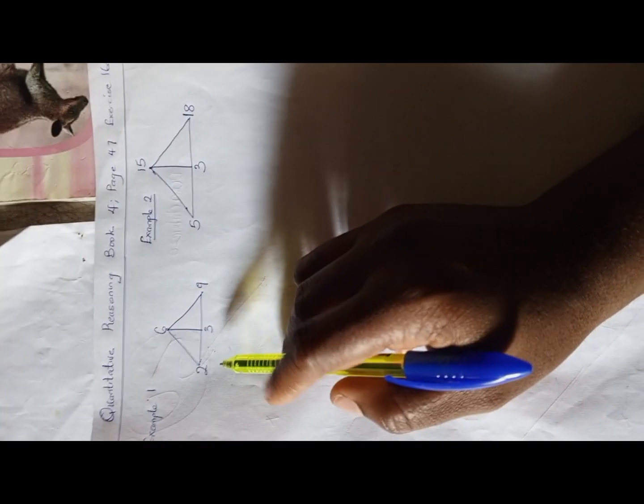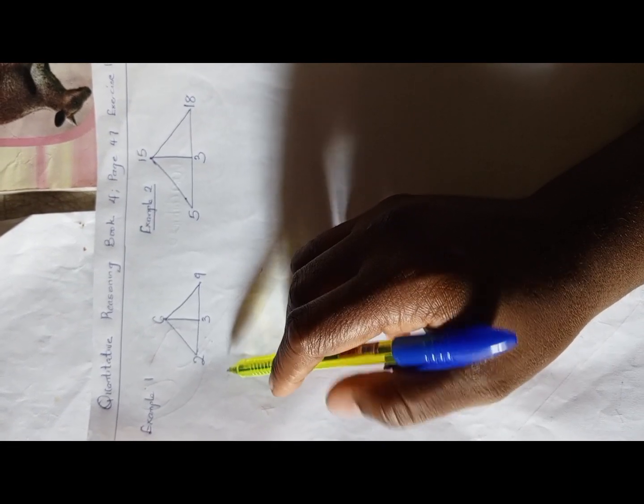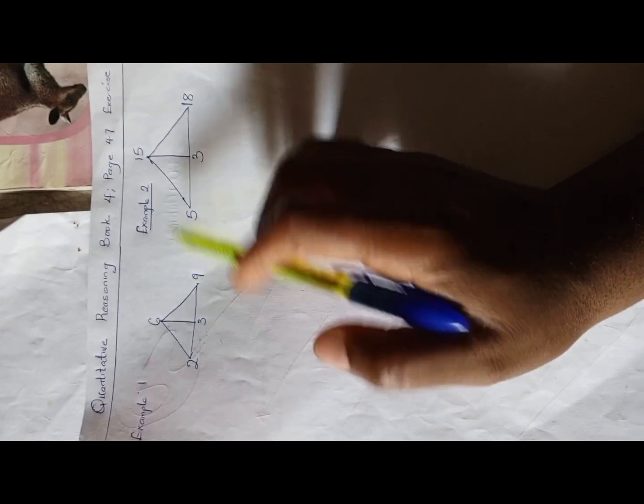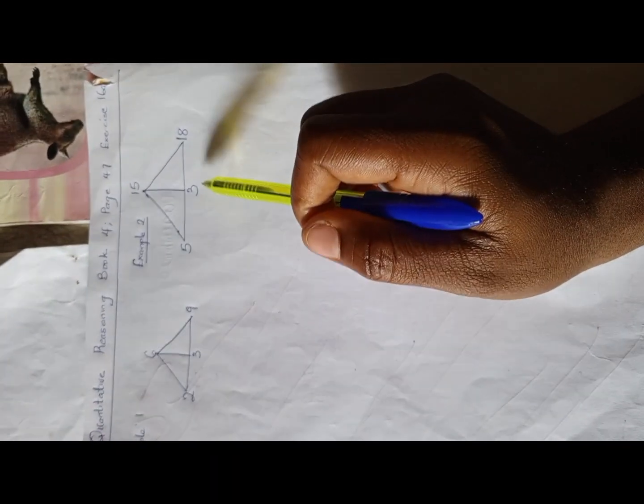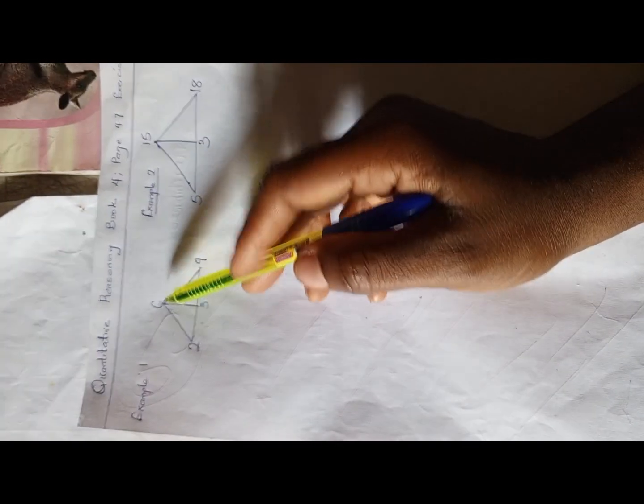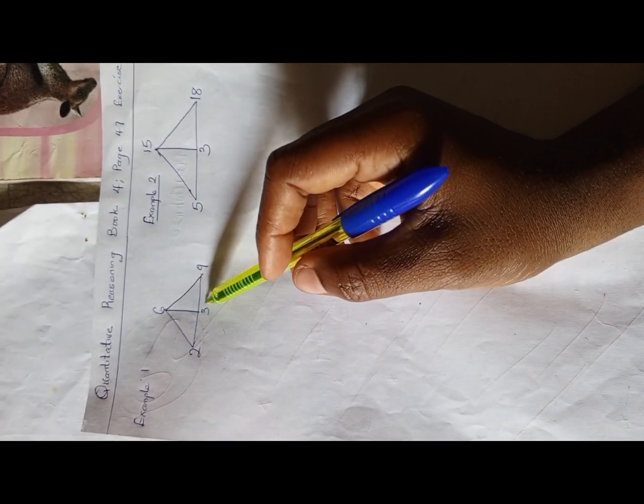We have 6, 2, 3, 9 in the first example, and in the second example we have 15, 5, 3, and 18. So let's try and go through them. We have 6 plus 3 equals 9, and 15 plus 3 equals 18.